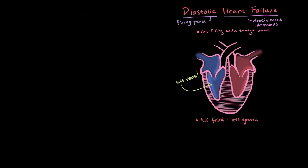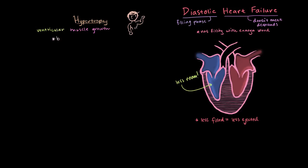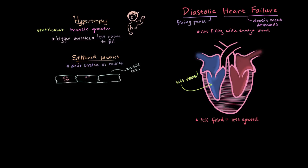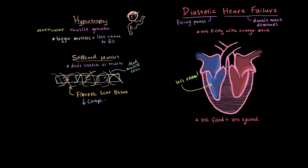How does diastolic heart failure come to look so different from systolic failure? There are pretty much two ways. The first is hypertrophy, which essentially means growth of muscle — specifically ventricular muscle growth. When these muscles grow, they take up more space, and since more space is taken up by the muscles, there's less space to fill. Secondly, these growing muscles get stiffer and don't stretch as much when they relax. There are also dead muscle cells in there because cell death is a main component of heart failure, and these dead muscle cells leave fibrotic scar tissue. This fibrotic tissue is connective tissue with much lower compliance — basically, compliance is the ability for the ventricle or any tissue to passively stretch and expand during filling. More stretch, more compliance means it can fill more.